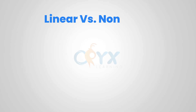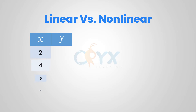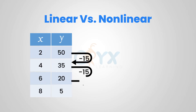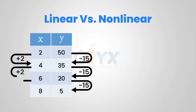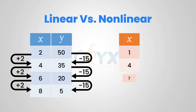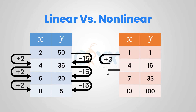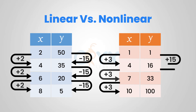We can also tell whether a function is linear or non-linear by looking at a table. In the table, if the rate of change is constant, then the function is linear. If the rate of change is not constant, then the function is not linear.